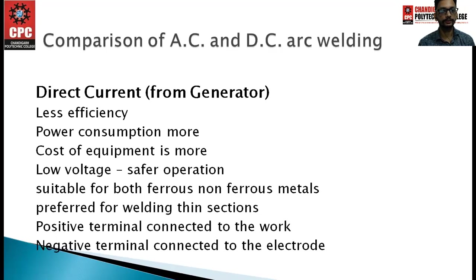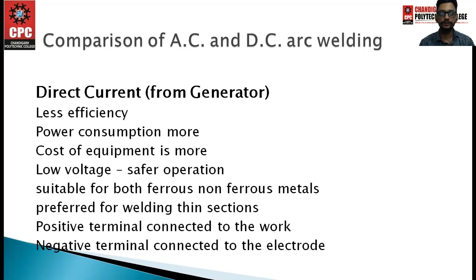DC (direct current from the generator) has less efficiency, more power consumption, higher equipment cost, low voltage and safer operation. It is suitable for both ferrous and non-ferrous metals and preferred for welding thin sections. The important point: in DC supply, the positive terminal is connected to the work and negative terminal is always connected to the electrode.